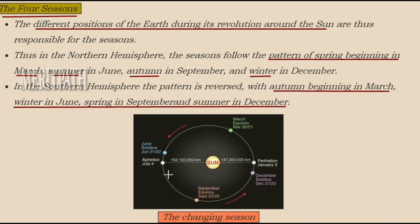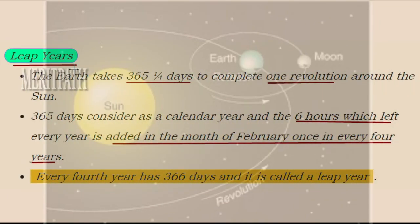Next let's learn about the leap year. To complete one revolution around the sun, the earth requires 365 days and 6 hours. This extra 6 hours is added up over 4 years to make one extra day, so every 4th year has 366 days — this is known as a leap year. The extra day is added to February, making it 29 days, which is why some children have their birthdays on 29th February, which comes only once every 4 years.